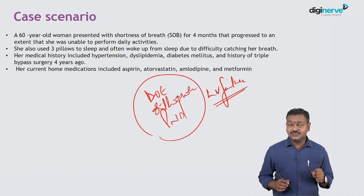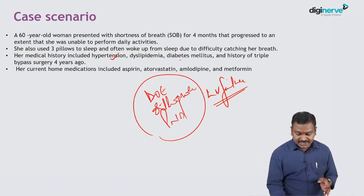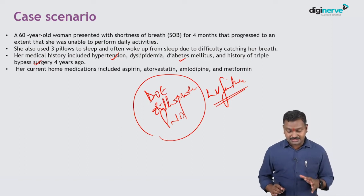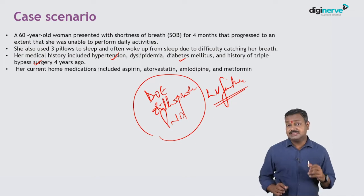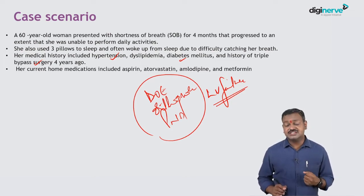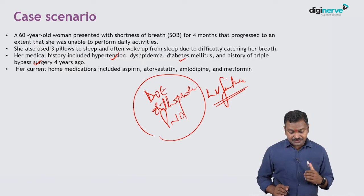She has risk factors for the same — hypertension, diabetes, and coronary artery disease in the past. So possibly this patient developed ischemic heart disease due to these risk factors, and secondary to that, LV dysfunction and LV failure have occurred. This is what we have inferred from this presentation.